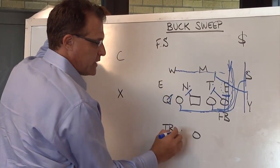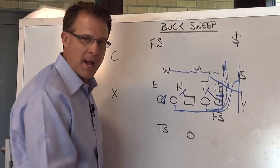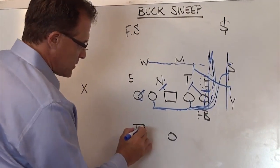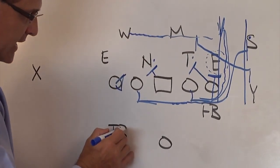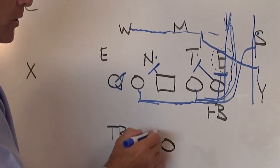Backside tackle is going to pick and hinge. Very simple here. Our quarterback's heels are at five and a half. Our tailback's alignment is over the tackle. His heels are at five. He is going to take two steps as he receives the football.